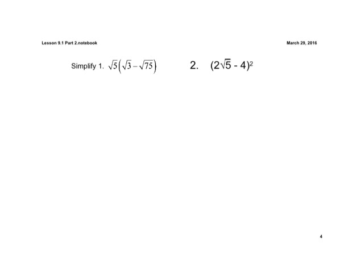Last set of examples here. Now we're multiplying — we're distributing that square root of 5 through to those parentheses. So what we're going to do first is we're going to distribute.